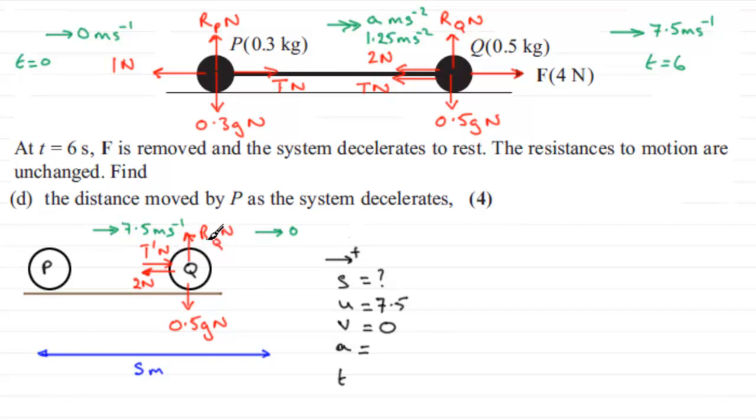Now this particle, Q and P, are going to experience exactly the same acceleration. Because they're connected by this rod. So there's going to be an acceleration that's going to act in that direction. We'll call it A meters per second per second. Not the same A though, as I said, that we have up here.